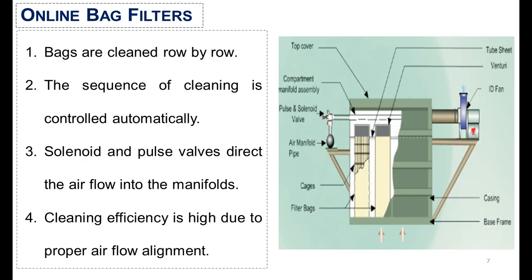Online bag filters are cleaned row by row and the sequence of cleaning is controlled automatically. For this purpose, solenoid and pulse valves are used. The cleaning efficiency of online bag filters is high due to the proper air flow alignment with the bag housing.